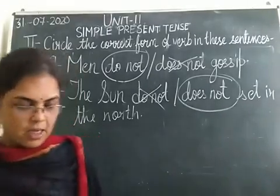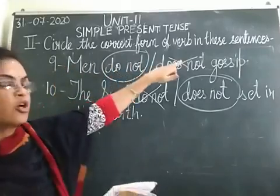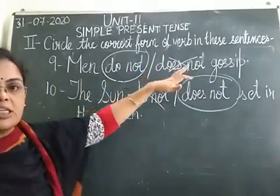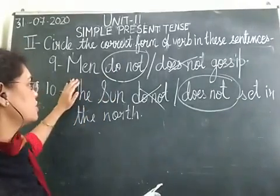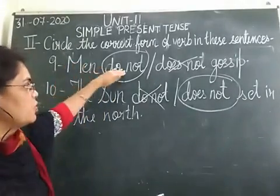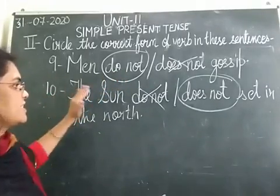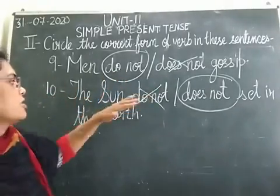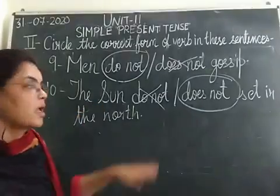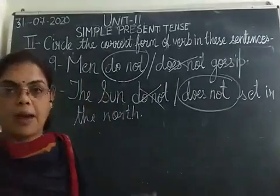Ninth: men do not gossip — circle 'do not.' If the subject is plural, we will be using 'do not.' And the tenth: the sun does not set in the north — if the subject is singular, we will be using 'does not.' Please keep this in mind.